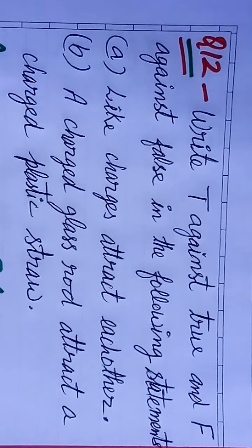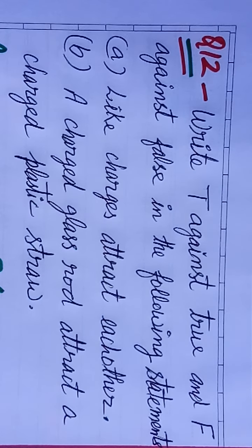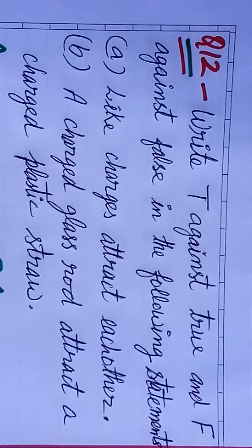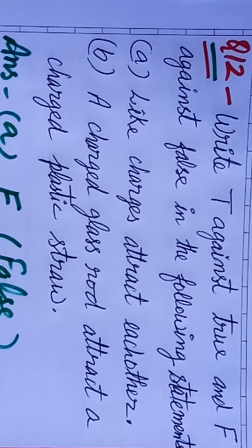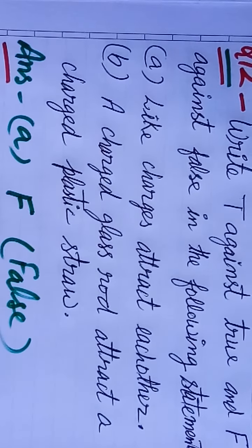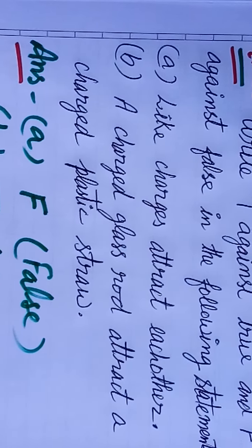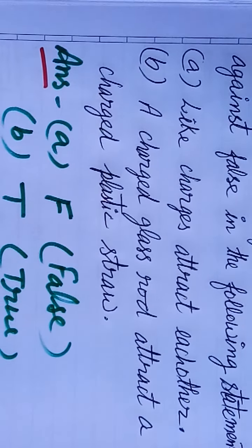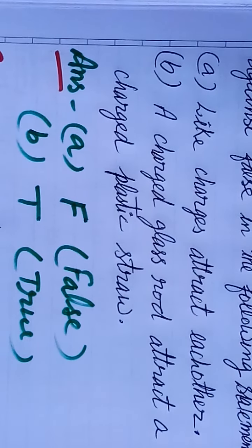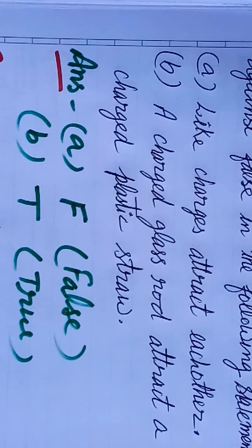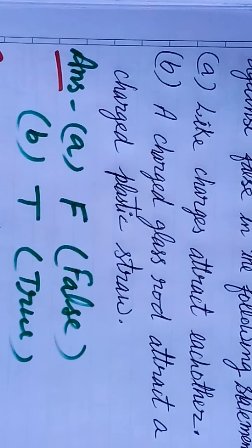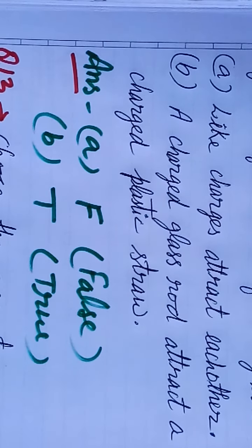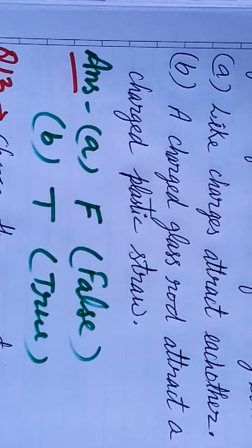Question twelve. Write T against true and F against false in the following statement. A. Like charges attract each other. B. A charged glass rod attracts a charged plastic straw. First one A is false. Like charges do not attract each other, so it is false. B is true.